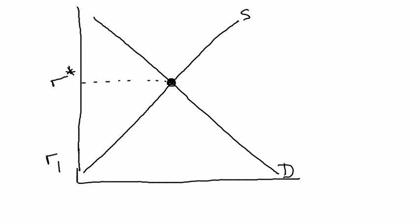Let's suppose for the sake of argument we start off down here at r1. If we're not in equilibrium, there are only two possibilities for what's going on in that market: there's either a shortage or there's a surplus. The first step is to figure out if there's a shortage or surplus, which means we have to figure out quantity demanded and quantity supplied.